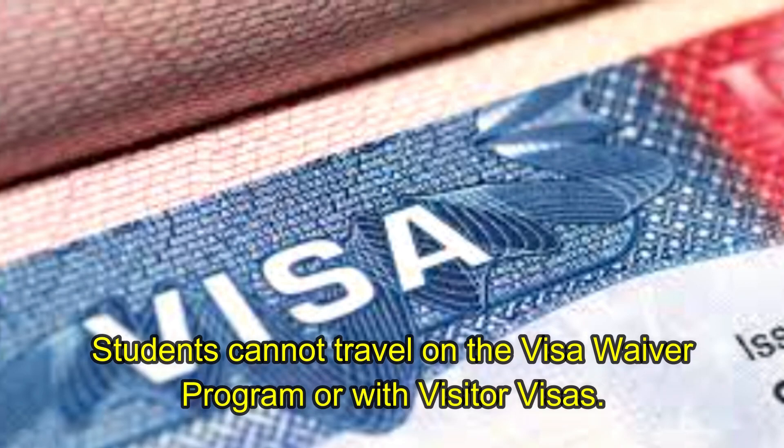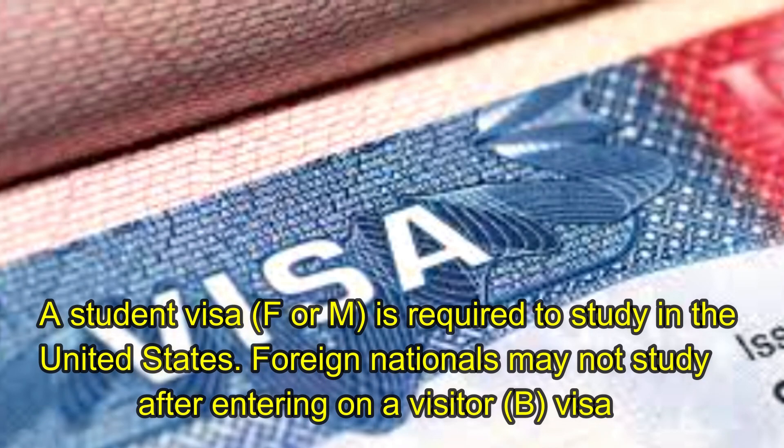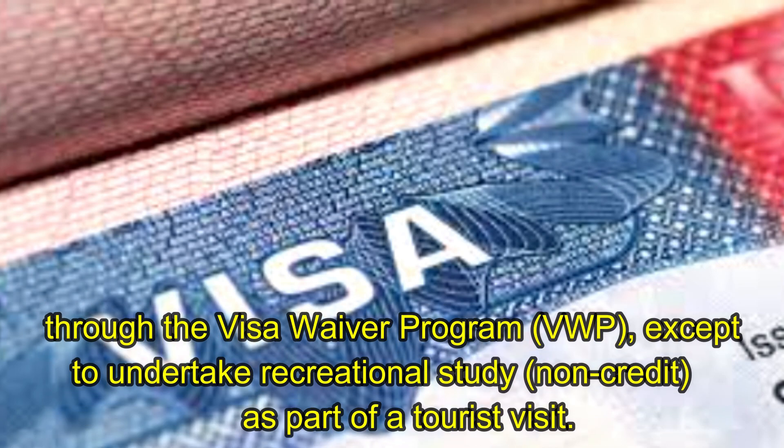Students cannot travel on the Visa Waiver Program or with visitor visas. A student visa, F or M, is required to study in the United States. Foreign nationals may not study after entering on a visitor (B) visa or through the Visa Waiver Program (VWP), except to undertake recreational study (non-credit) as part of a tourist visit.